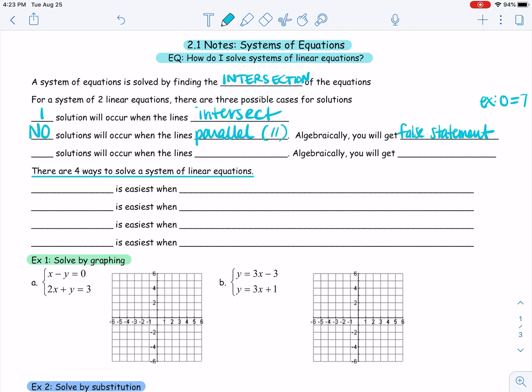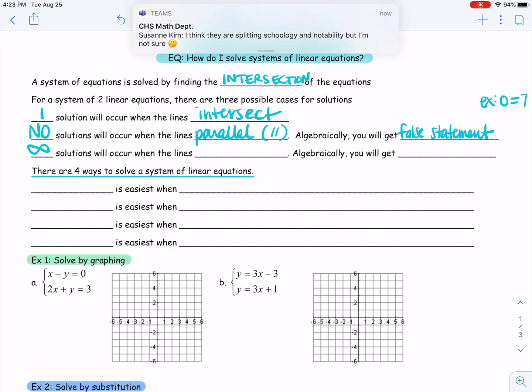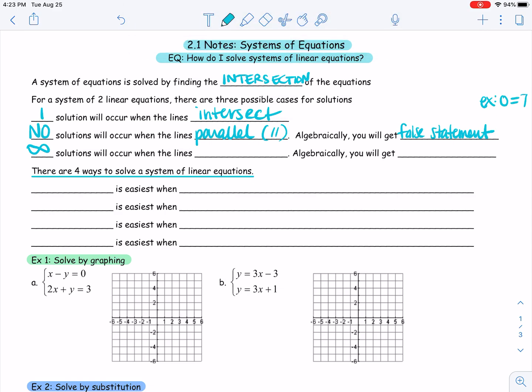What's the third thing that could happen? They could either cross, you'd get one solution. They could not cross, you'd get no solutions. What if they are on top of one another? What if they are the same line? And if that's the case, you're going to have infinite solutions. Infinite solutions will occur when the lines are the same.